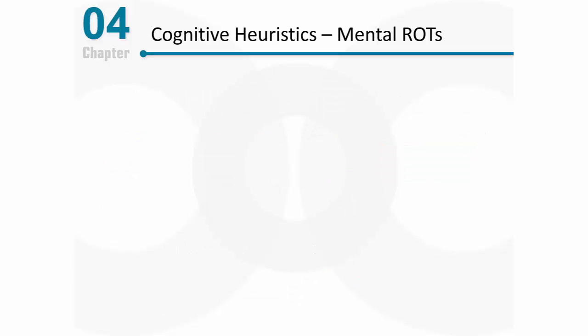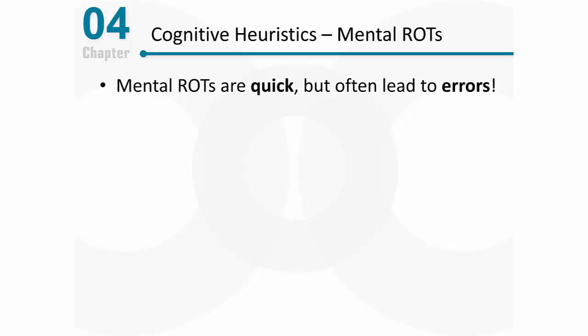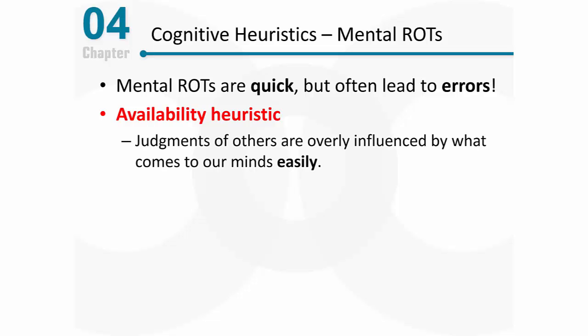I want to talk about cognitive heuristics. These are cognitive shortcuts, or what we might call mental rules of thumb. These little shortcuts are quick, but they can lead to errors. Some of these errors are related to what we might call the availability heuristic. The bottom line is that judgments of other people that we make are overly influenced by what comes to our minds very easily.